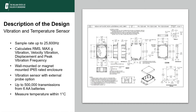The vibration and temperature sensor has a sample rate of up to 25,600 Hz. It can calculate different vibrations and can be wall mounted or magnet mounted. The sensor uses a probe to calculate a more accurate reading and can transmit to the modem up to 500,000 times with just six AA batteries.